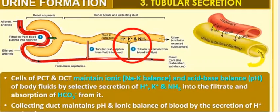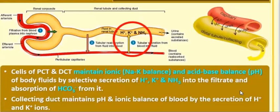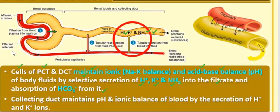The last step is tubular secretion. The cells of PCT and DCT maintain ionic and acid-base balance of body fluids by selective secretion of H+ ions, K+ ions, and NH3 into the filtrate, and reabsorption of HCO3- from it. The collecting ducts also maintain pH and ionic balance by secreting H+ and K+ ions, so that urine is ultimately excreted in hypertonic, nitrogenous form.